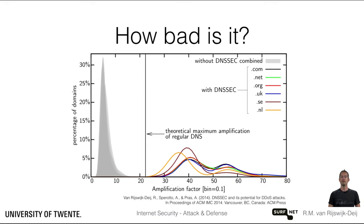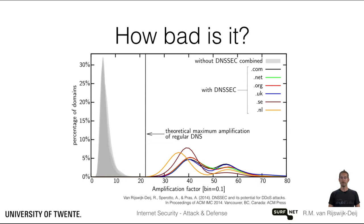In 2014, we performed a study to estimate how much worse DNSSEC makes amplification. We studied 2.5 million DNSSEC signed domains and compared the amplification with 2.5 million unsigned domains. The graph on this slide shows the result of this study for so-called Any queries. This query type is most frequently abused in amplification attacks, and we will explain a little bit more about it in the next slide.